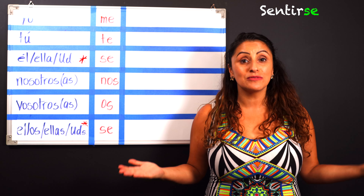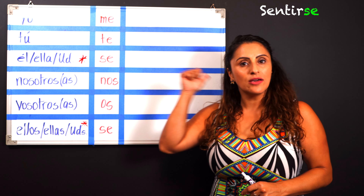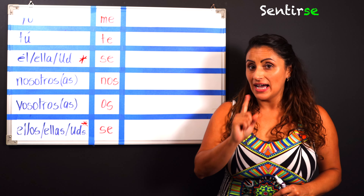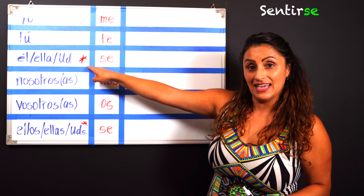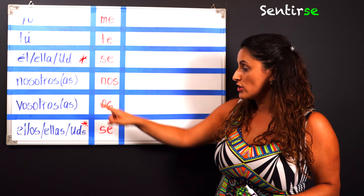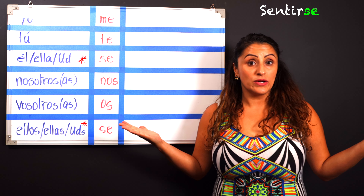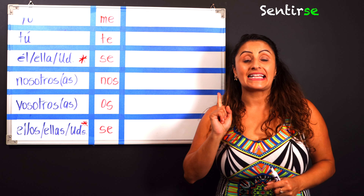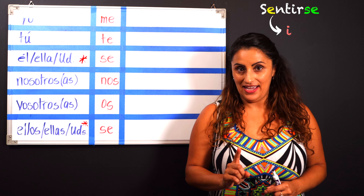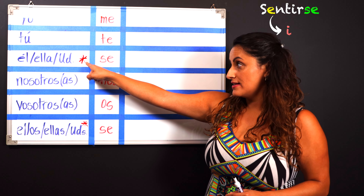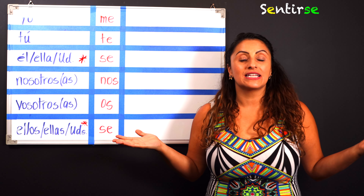What you need to remember is that those verbs that end in IR and that are stem-changers in the present tense will also have a stem-change in the preterite. But, and here's the important part, they will only stem-change in the third person in the preterite — that means singular and plural. So it would be on él, ella, and usted, and also on ellos, ellas, and ustedes.